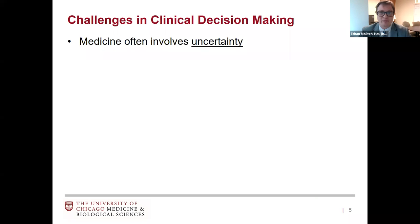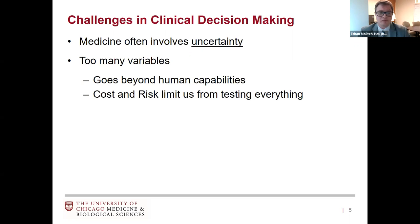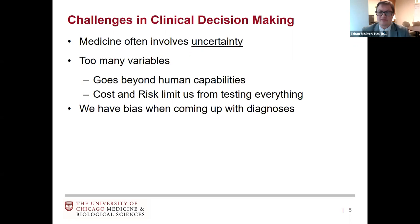Medicine involves so much uncertainty — you'll never run into an internist who says they're 100% accurate. There are so many variables that go into every clinical decision, some patient-based and beyond our human capacity to process. There are the costs and risks of testing, so we can't test for everything. We also have biases that influence us — not just gender and race biases, but cognitive biases and heuristics that come into play when thinking about patients.